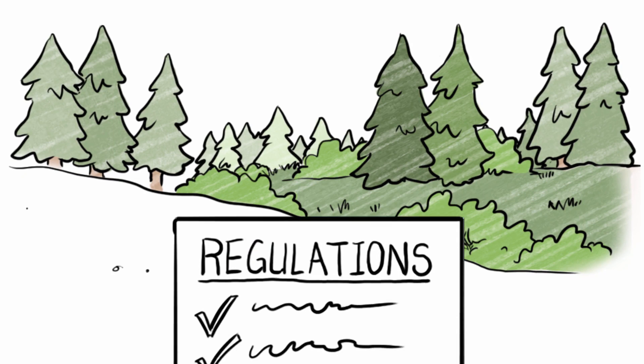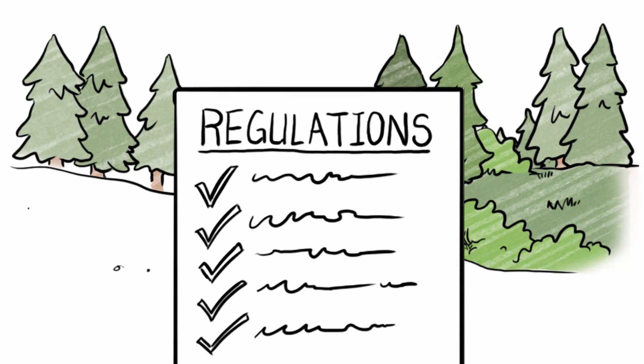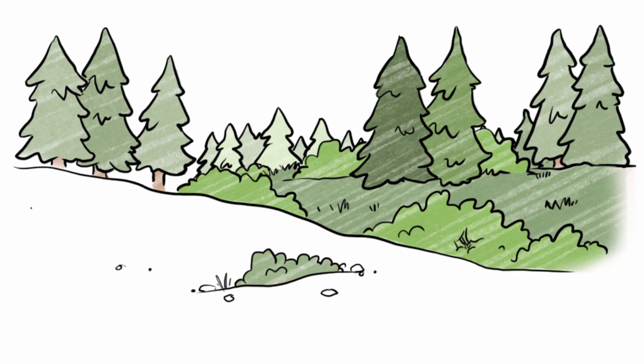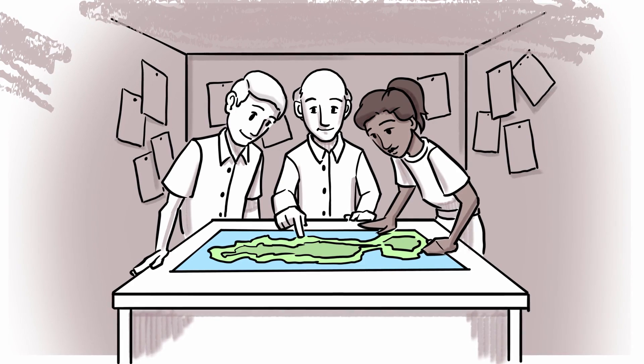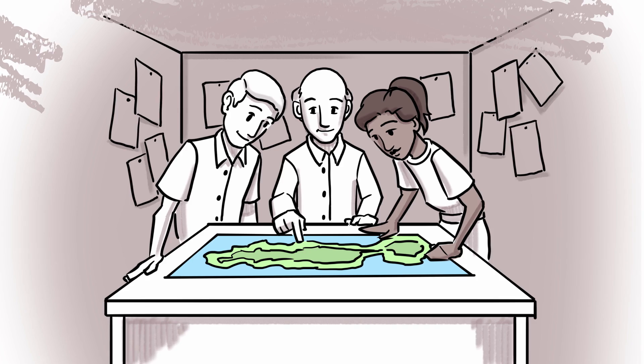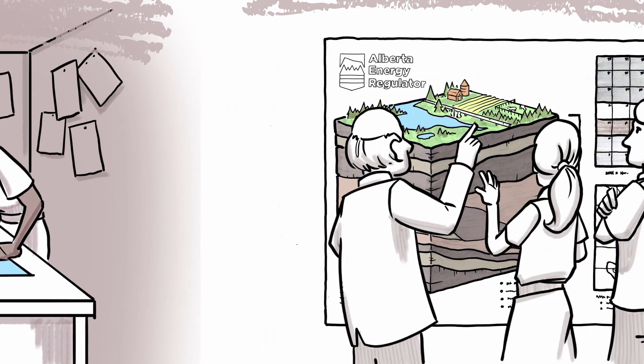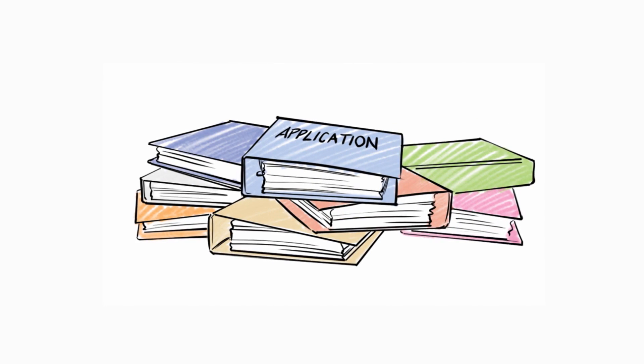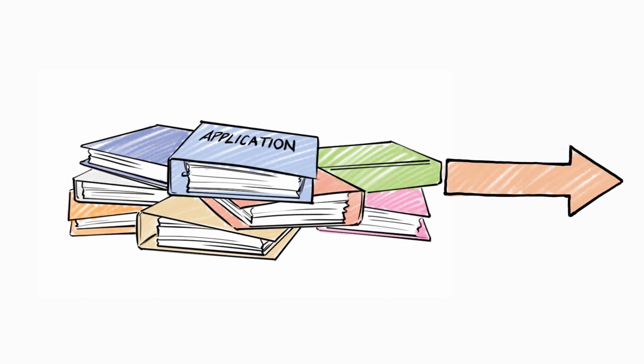Rita explains that regulating an oil sands project starts well before a truck ever rolls onto a site. If a company wants to mine, they start the process by purchasing the mineral rights from the province and then talking about the project to the people in the area. After listening to the communities and completing complex site and project assessments, the company must submit a detailed application to the AER.